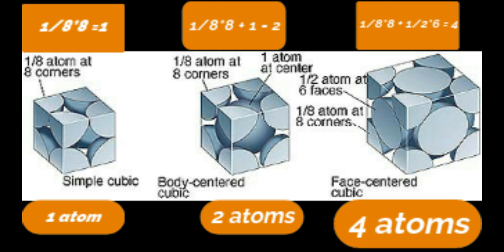So, to conclude: simple cubic has a total of 1 atom, body-centered cubic has 2 atoms, and face-centered cubic has 4 atoms per unit cell. Looking at these diagrams, you will find gaps present in those arrangements. What do those gaps mean? That we will see in the next part, called the Study of Voids.